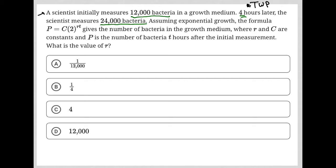The next sentence says, assuming exponential growth, the formula P equals C times two to the RT power gives the number of bacteria in the growth medium where R and C are constants, and P is the number of bacteria T hours after the initial measurement. What is the value of R?